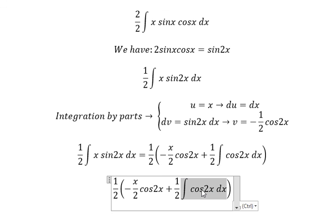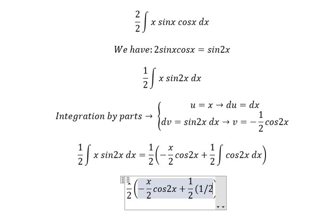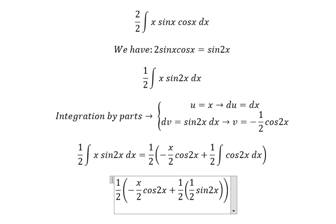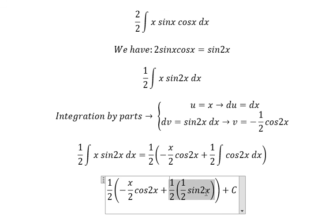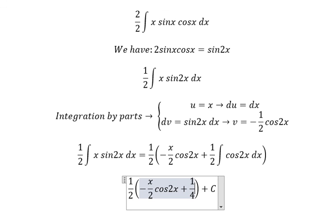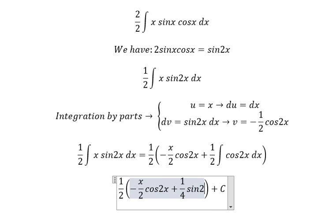This integral equals 1 over 2 sin 2x, and we put C here. So this becomes 1 over 4 sin 2x.